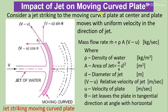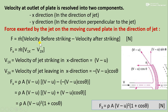Let us see the impact of jet on a moving curved plate. In this figure, a jet of water is considered that is striking the plate which is moving with velocity u. Jet velocity is v, so in this case the relative velocity is v minus u. The mass flow rate of the jet is m-dot equals rho times a times (v minus u) kg per second, where rho is the density of water and a is the area of the jet, that is pi by 4 times d squared, where d is the diameter of the jet. Theta is the angle made by the tangential component of the velocity with the horizontal, which is resolved into x and y direction components.